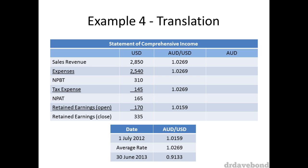Sales revenue of $2,850 becomes $2,775 in Australian dollars. And expenses of $2,540 in US becomes $2,473 in Australian. This leaves a net profit before tax of $302. This is important — the $302 is calculated based on the translated amounts, it isn't translated itself.